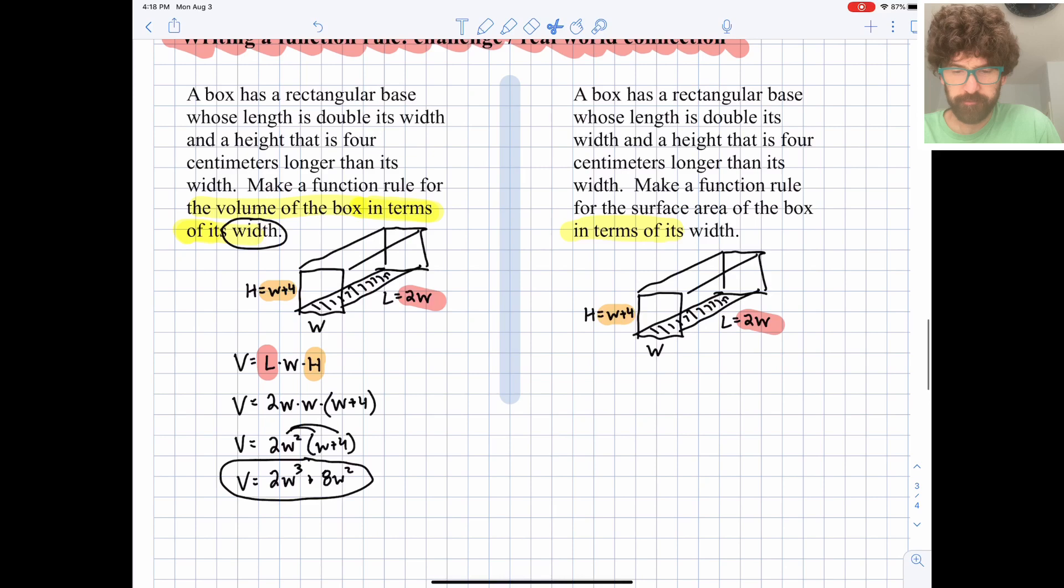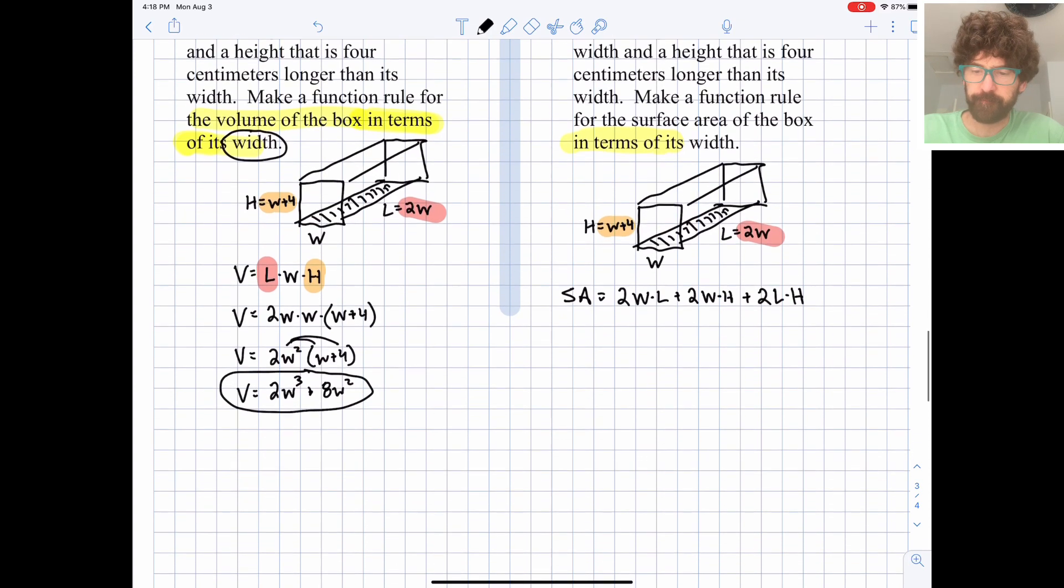So surface area is really just a way of adding up the areas of each of the six faces. So an easy way to do that is we have 2 width times lengths, plus 2 width times heights, plus 2, what don't I have yet, length times heights. And we just need to fill all that in. Okay?